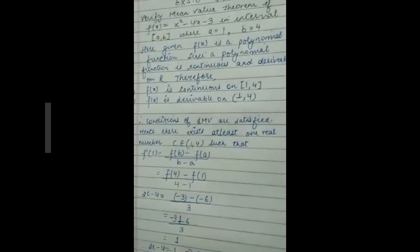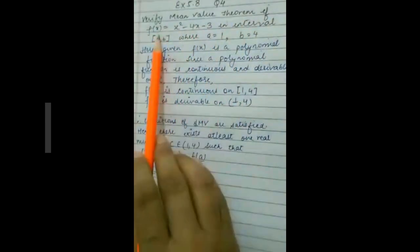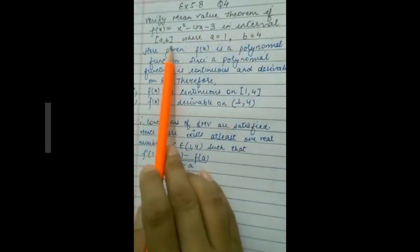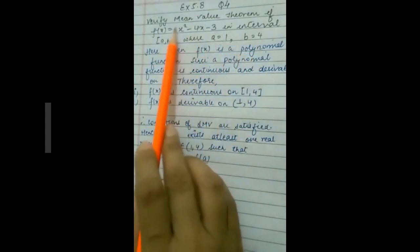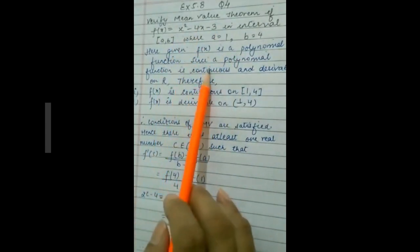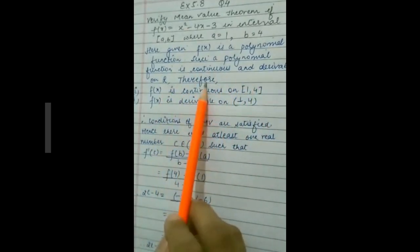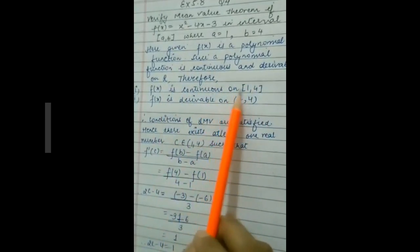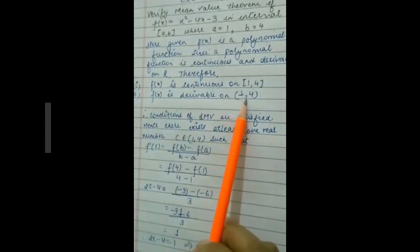Next, Question 4 is for the Mean Value Theorem. It says: verify the Mean Value Theorem for f(x) = x² − 4x − 3 on the closed interval [a, b] where a = 1 and b = 4. Since the given expression is a polynomial, polynomial functions are continuous and derivable on ℝ.